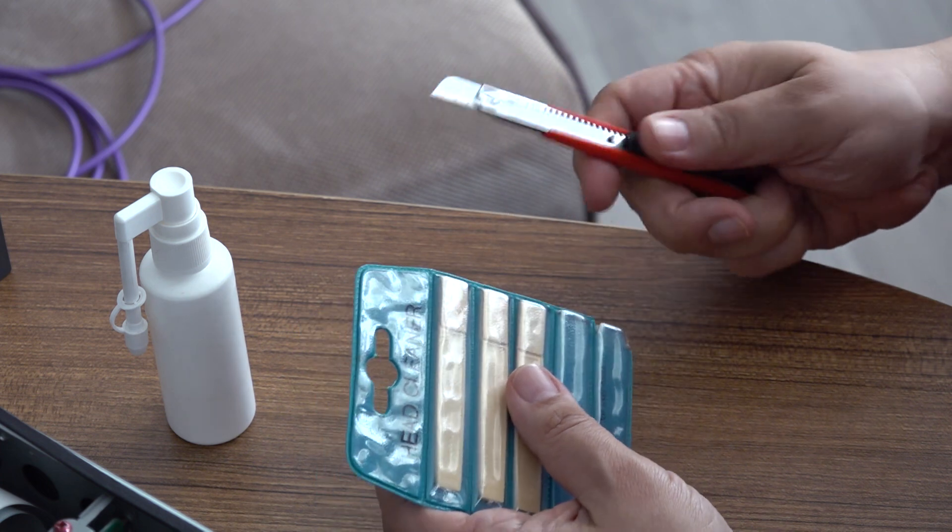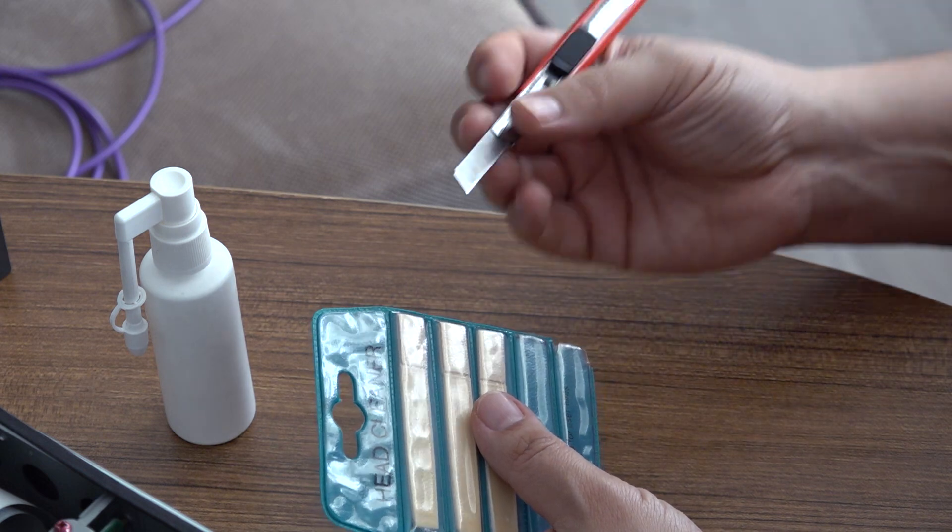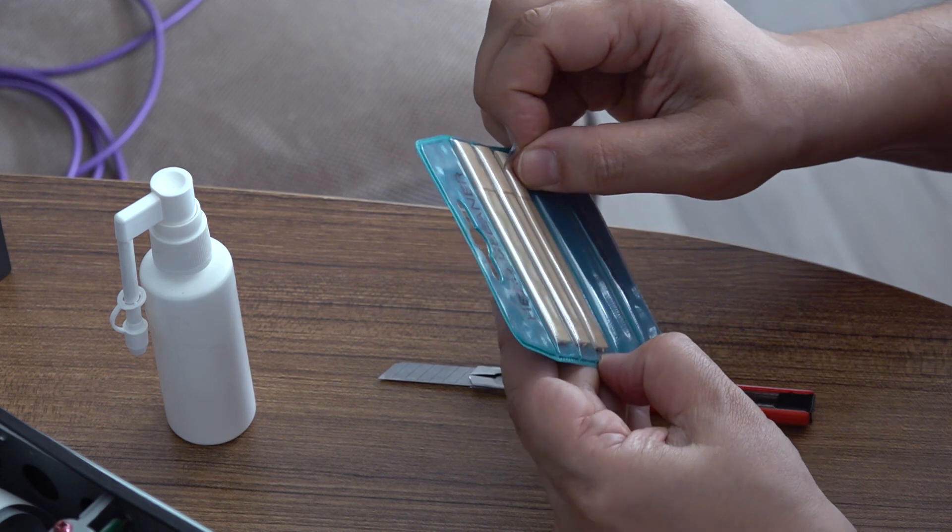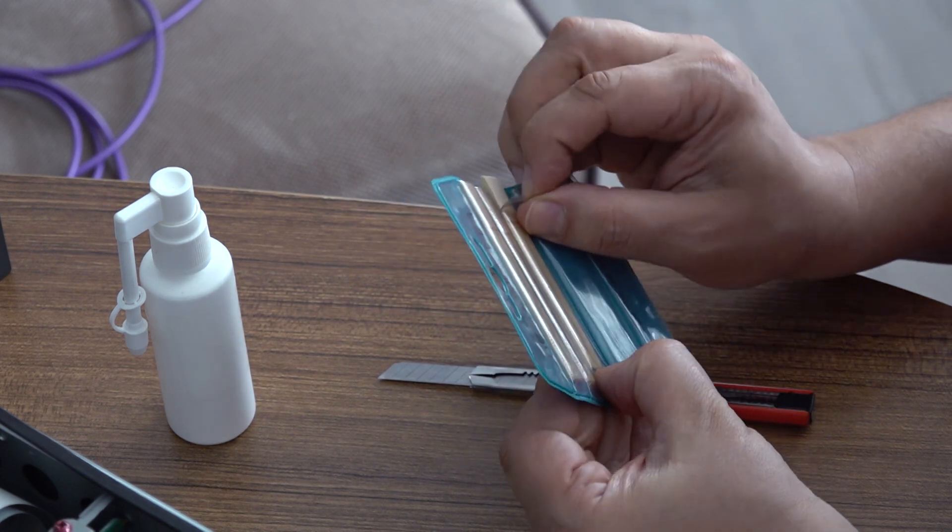Other VTR upper drums like in Betamax, VHS, Betacam, U-Matic, etc. are slightly bigger so I can clean them by finger using a special cloth and alcohol.